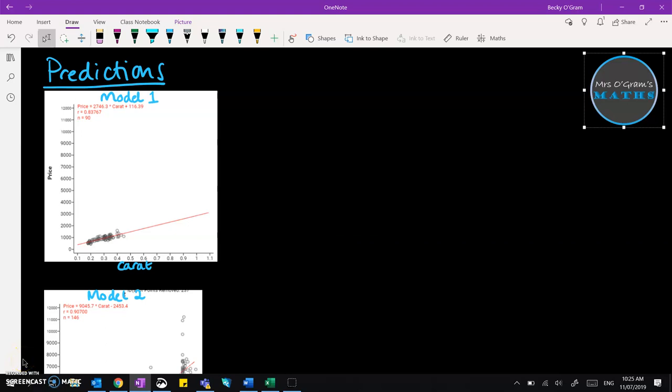Welcome back to Mrs. O'Gramm's Maths while we work through a bivariate data project for level 3 statistics. We've got our two models for this diamond dataset and now we're going to use them to make a prediction.